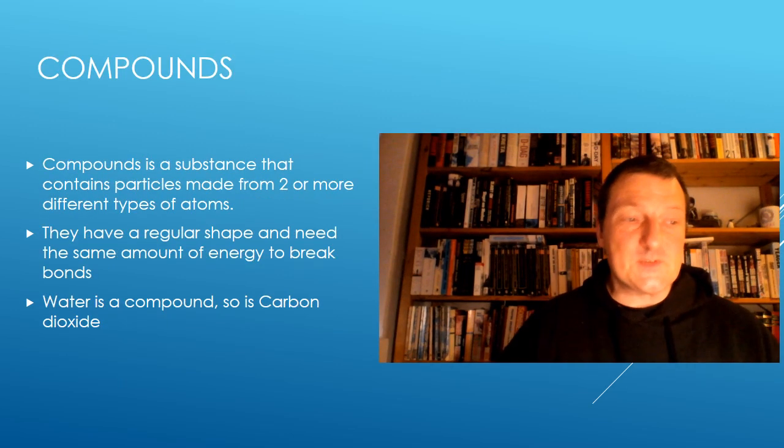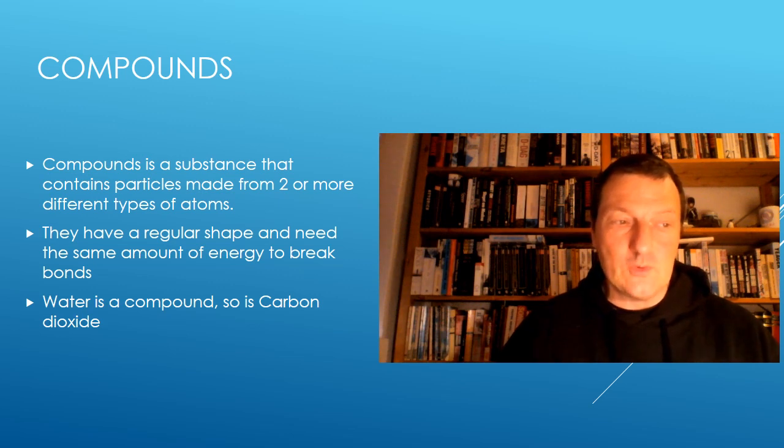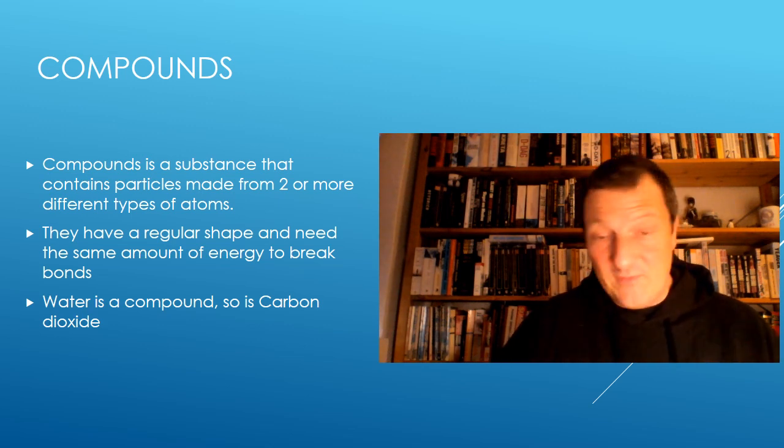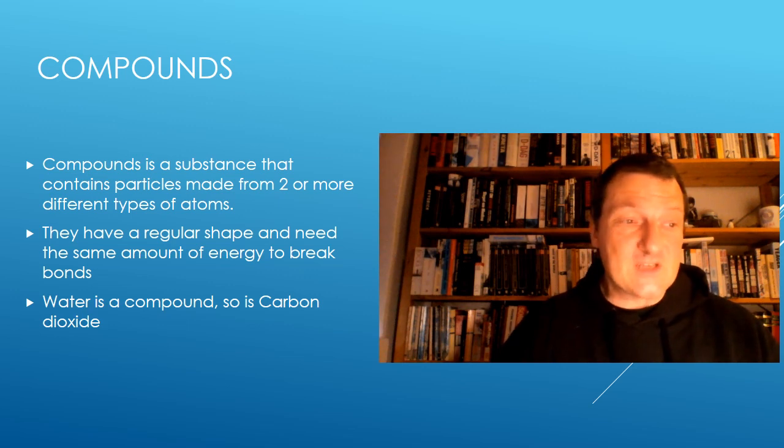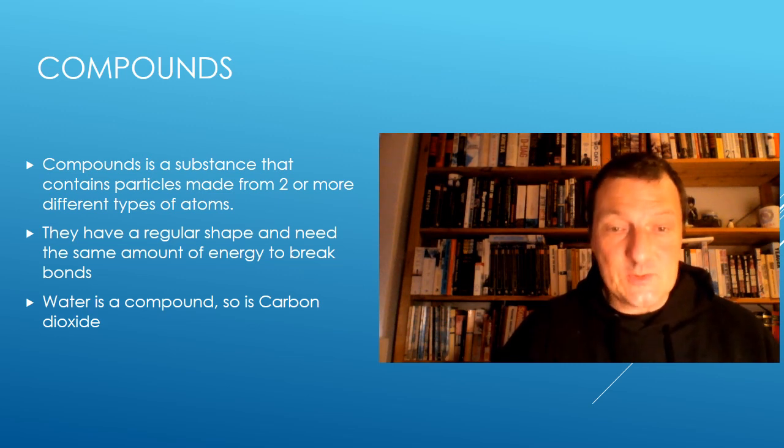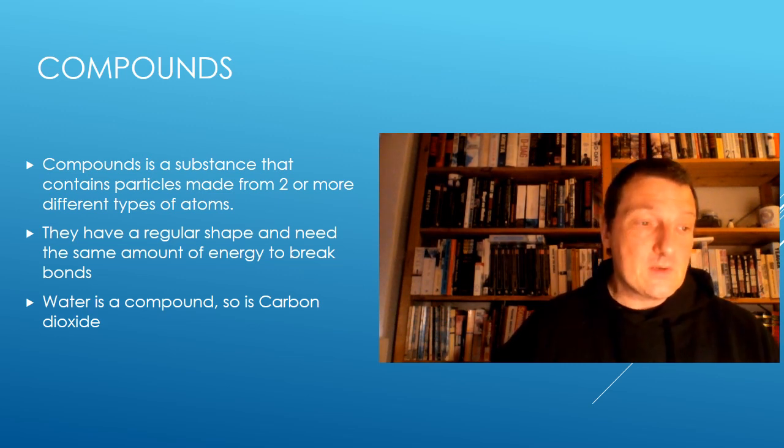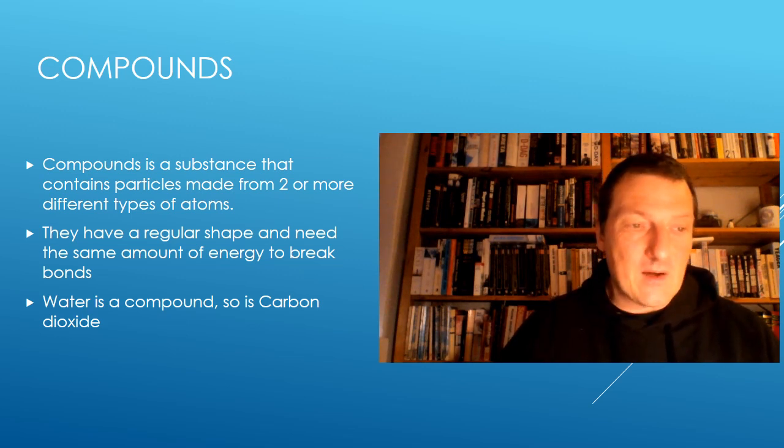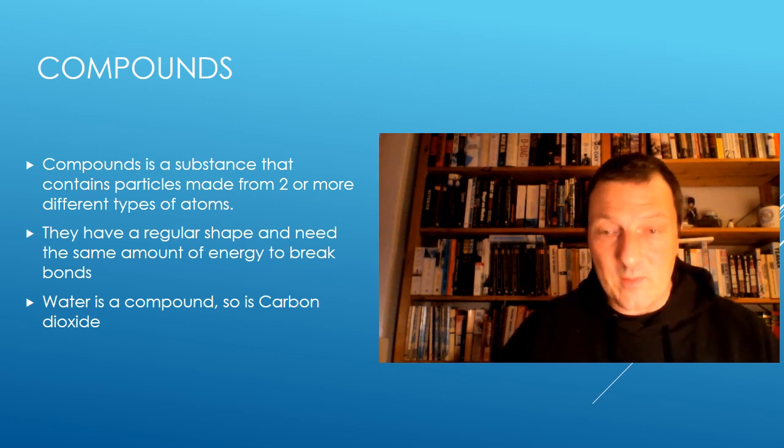A compound is a substance containing particles made from two or more different types of atoms, two or more types of elements. Like elements, compounds have a fixed melting point, fixed boiling point. CO2, for example, is a compound. The particles are in a regular arrangement, for example in CO2 or in methane. Compounds must contain at least two atoms of different elements. For example, CO2, glucose, and water are all compounds and are important for what we're working with here in marine science.